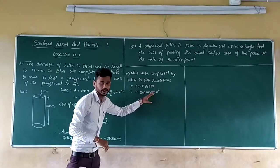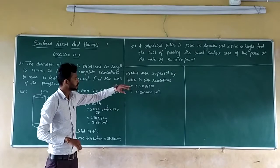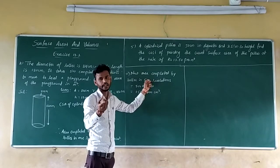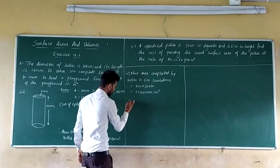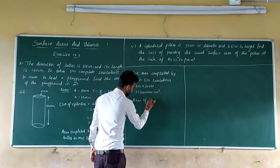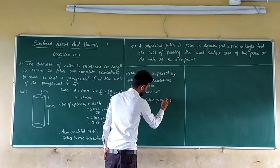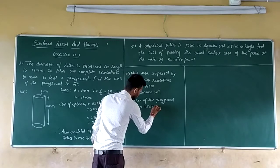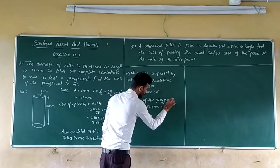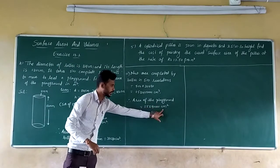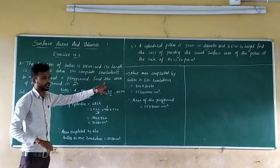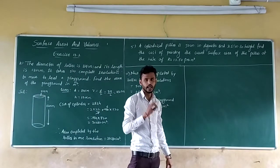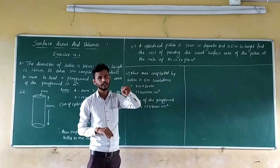The area completed by the roller in 500 revolutions is the area of the playground. Therefore, area of the playground equals 1,58,40,000 cm². But they asked for the area in m². To convert cm² to m², divide by 100 into 100 — that means divide by 10,000.